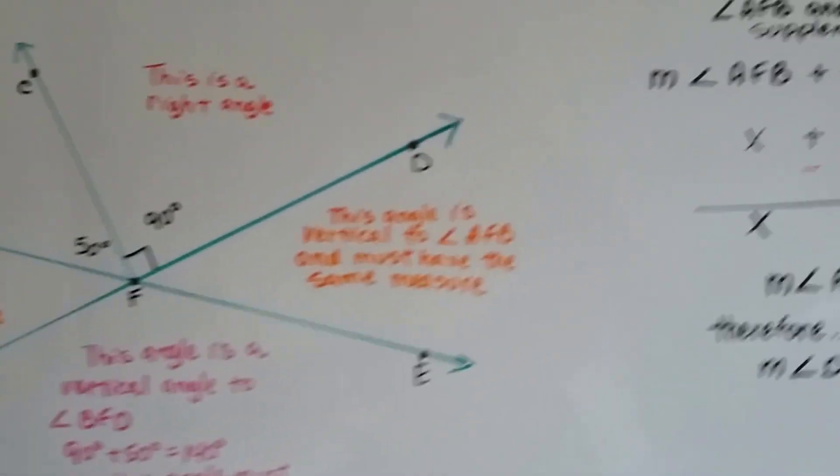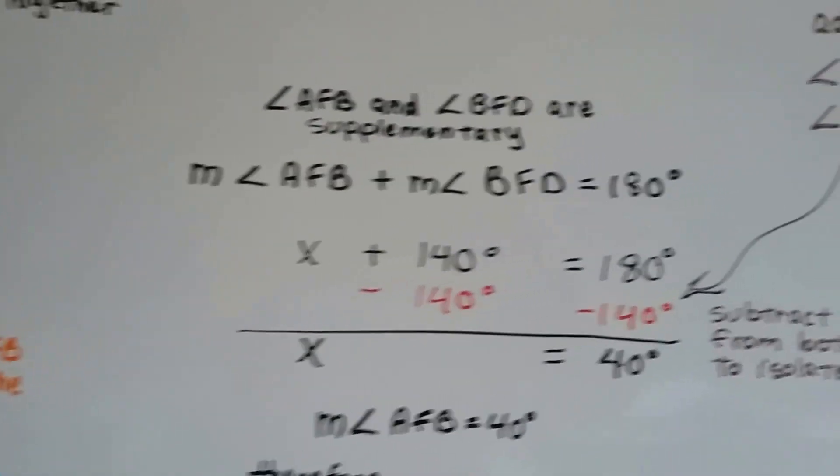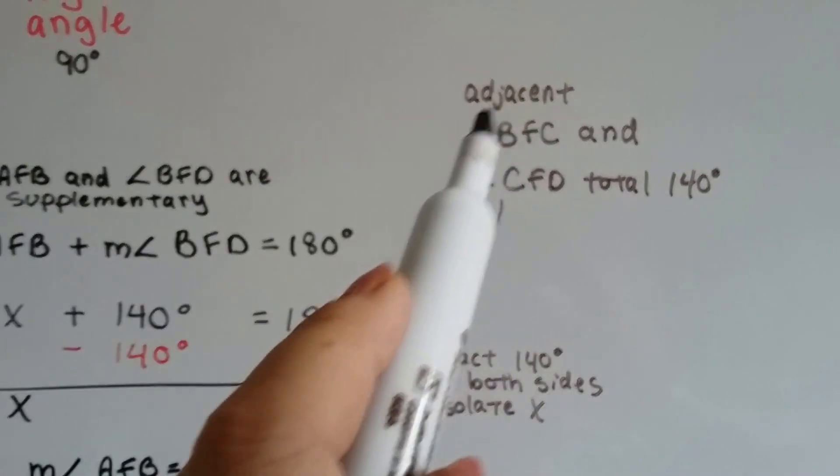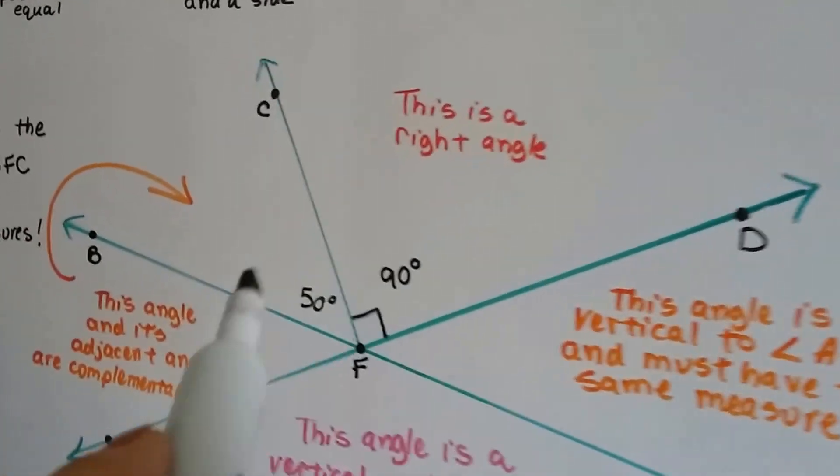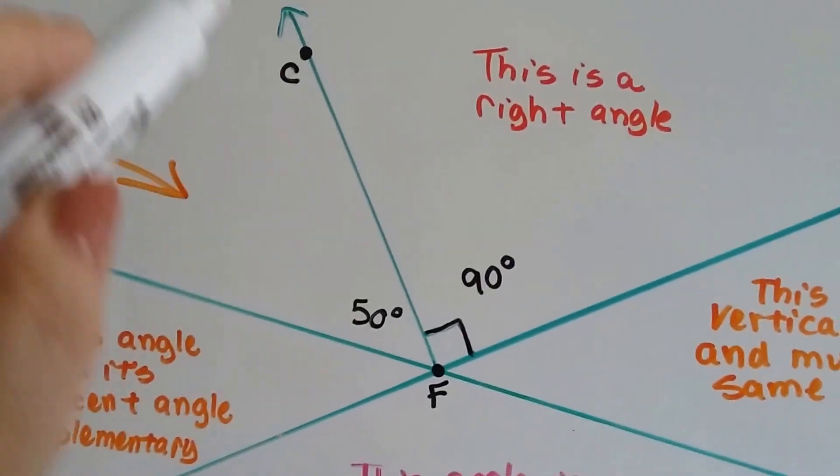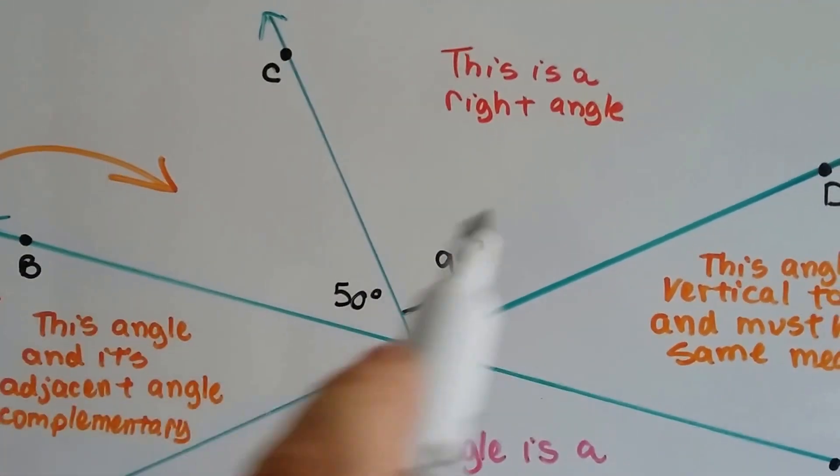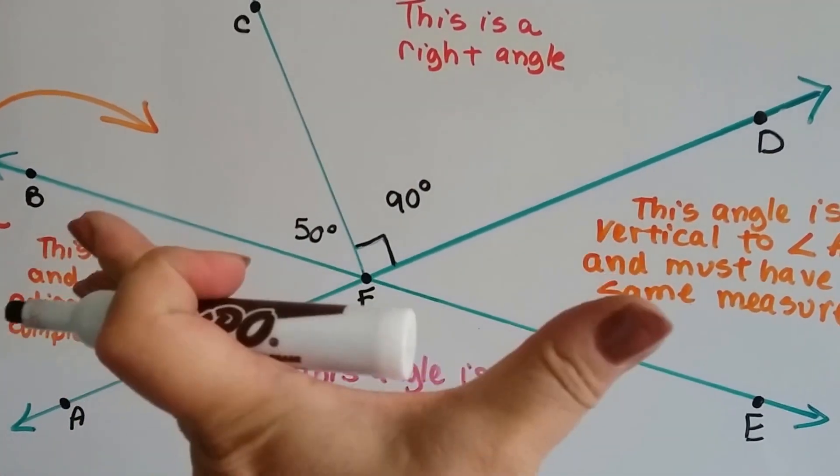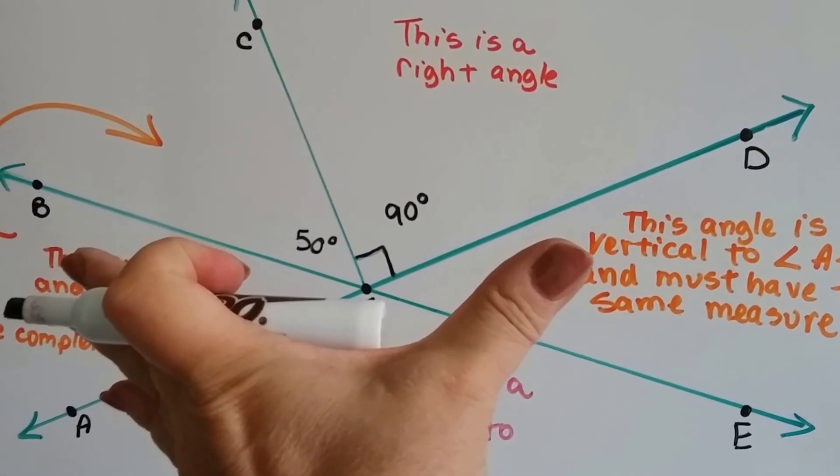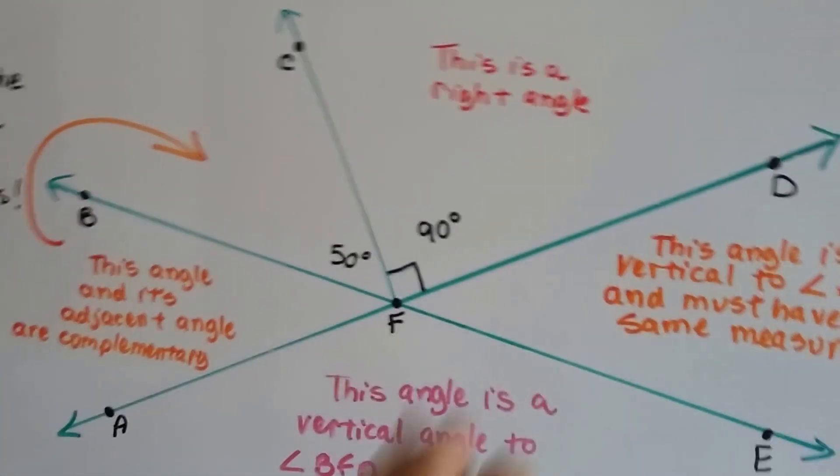So let's take a look at this one step problem we've got. So we know that angle BFC and CFD total 140 because they're adjacent angles, 90 and 40. They share this line right here, this CF, and together they create this angle right here. That's 140 degrees.